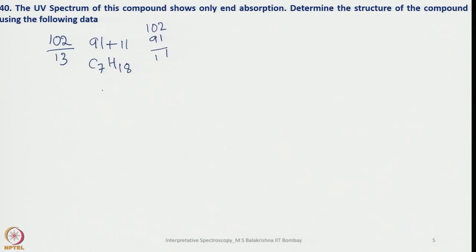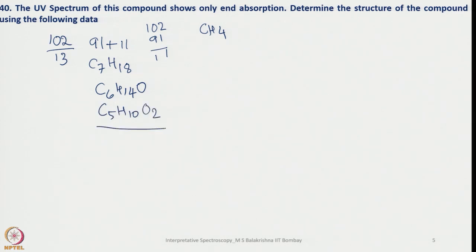With this, let us add one oxygen — when we add oxygen we have to take out one CH4 group, so it becomes C6H14O. Since both carbonyl and ester group are there, it has to be COO, so we account for one more oxygen, giving C5H10O2. Assuming this is the correct molecular formula, let us look into the hydrogen deficiency index using the formula C + 1 − (H/2), since no nitrogen or halogens are present. That gives 6 − 5 = 1.